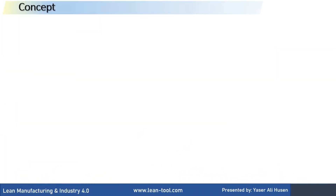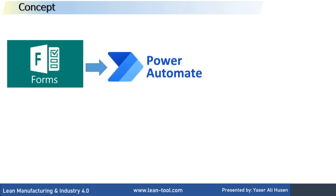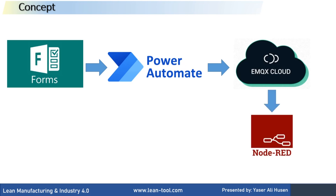This is the concept. From Microsoft Forms, data will be submitted, and it acts as a trigger in Power Automate. Then Power Automate will send an MQTT message to the broker. Then Node-RED will receive the message. The received message can then be sent to WhatsApp using the WhatsApp Link Node in Node-RED.